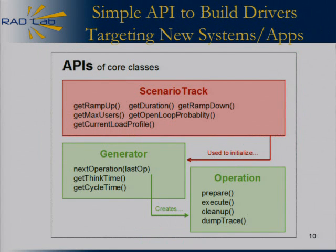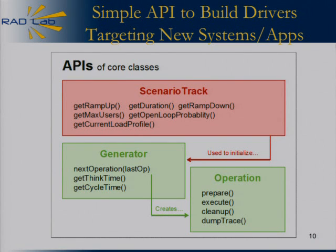To achieve extensibility, we strove for a very simple API for creating generators and describing operations. A generator, at its basic level, just needs to answer: tell me what to do next given what I've done before. This lets you follow Markov chains if needed, or simply ignore the previous value. For operations, it's equally generic: tell me what to do before execution, execute, then describe cleanup and logging — in case you want to take RAINN's output and replay it in something like HTTP perf.